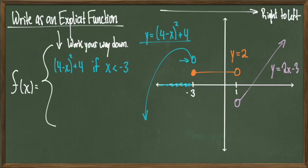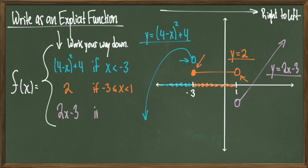Looking at the orange function y equals two, we see that this function takes place on the number line between negative three and positive one, where I have a closed circle above negative three and an open circle above positive one. So I write that in my piecewise function as: two if negative three is less than or equal to x is strictly less than one. For the last piece, if x is strictly greater than one I get the purple function, which is two x minus three. Therefore, I write: two x minus three if x is strictly greater than one. I'll emphasize this again — x is strictly greater than one because I have an open circle at the endpoint of the purple function. And that's how you write the piecewise function for this graph.